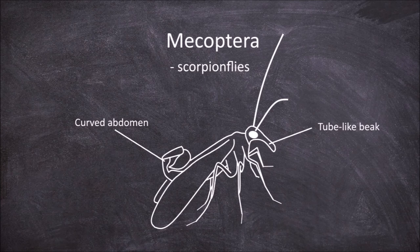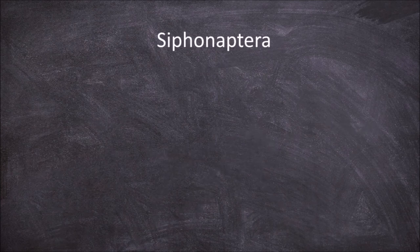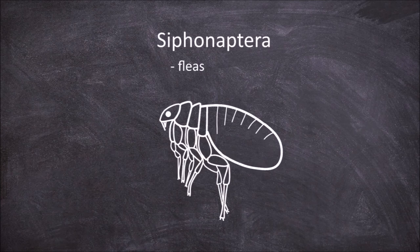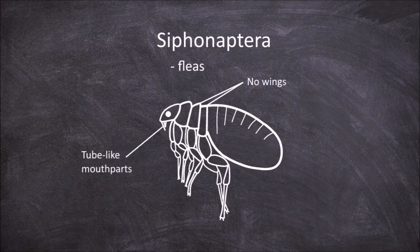The next order is the Siphonaptera, which are the fleas. These are small insects that lack wings and possess tube-like mouthparts adapted for piercing and sucking.